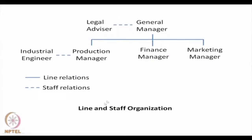In a line and staff organization, two examples of staff positions are added. The general manager receives legal advice from a legal cell headed by a legal advisor — a staff function. The production manager is advised by the industrial engineering department — also a staff function. The relationship between them is advisory, while the relationships within the line remain line relationships. This is called a line and staff organization.